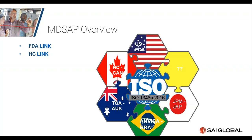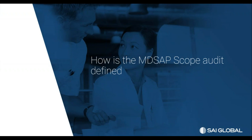The current status is five participating countries, with other regulators interested in joining the consortium. Due to the challenges auditing organizations like SiteGlobal face in training auditors and matching the benchmark of acceptance of reports for the five countries, they've limited expansion until more information is available. Auditing organizations are the MDSAP term — an alternative to a notified body or certification body. This presentation also shares direct links to the MDSAP and Health Canada webpages.